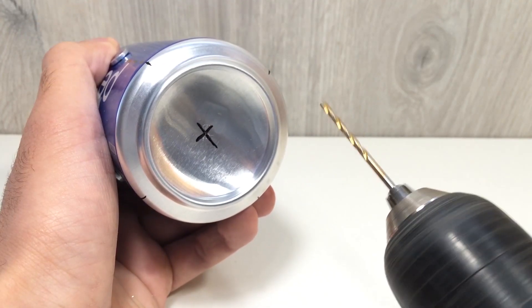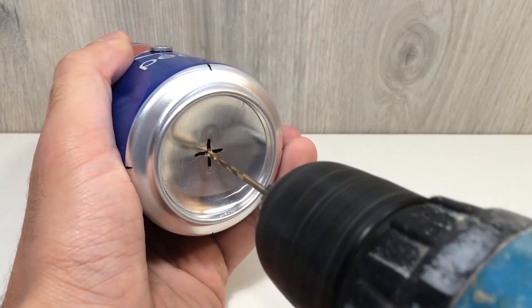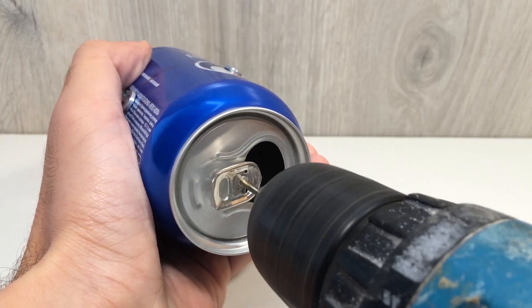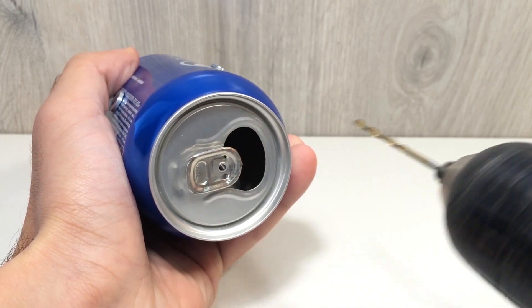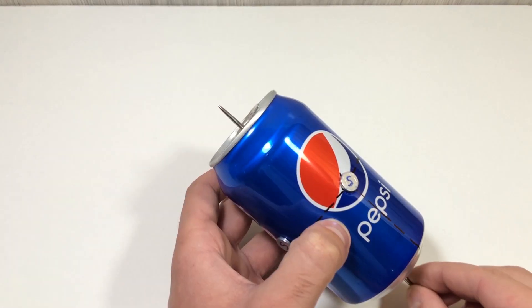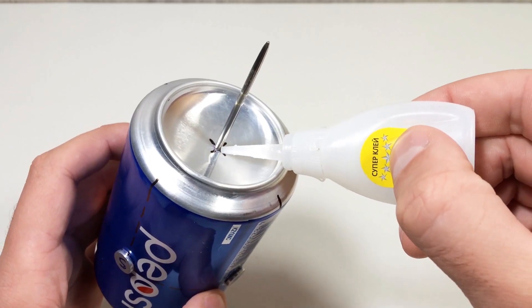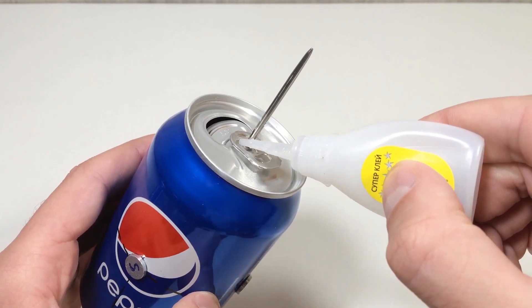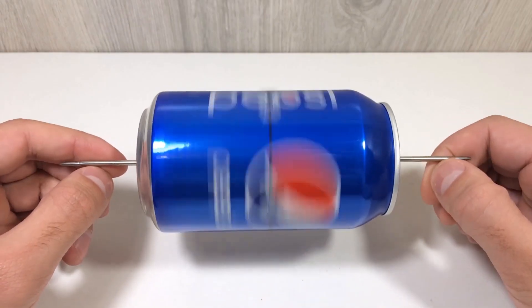Next, drill small holes in the exact center of the top and bottom of the can. Insert a knitting needle through these holes. This will be the axle of the motor.